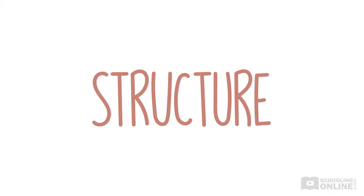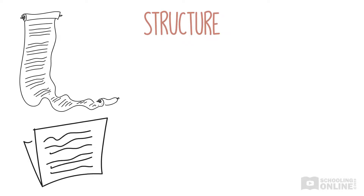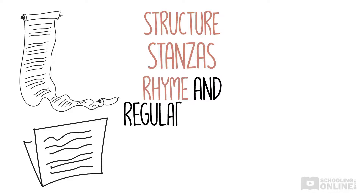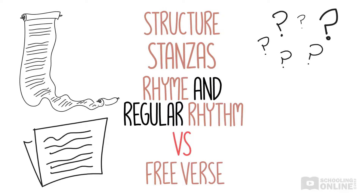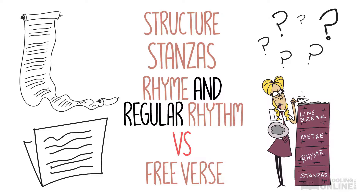Now that we've talked about poetic form, let's think about the structure of poems, which also helps us work out what the poet's message is and how it's conveyed. Is the poem long or short? Is it broken up into what look like song verses, which are called stanzas? Or does it have long, unbroken streams of text? Maybe it has rhymes that give the poem a regular rhythm, or maybe there's no such pattern — this is what we call free verse. When you ask questions like these, you're talking about the elements of poetic structure. Let's break these elements down one by one: stanzas, rhyme, meter, and line break.